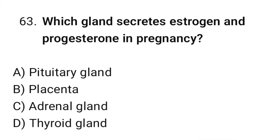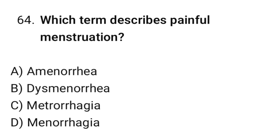Question No. 63: Which gland secretes estrogen and progesterone in pregnancy? The correct option is B. Placenta. Question No. 64: Which term describes painful menstruation? The correct option is B. Dysmenorrhea.